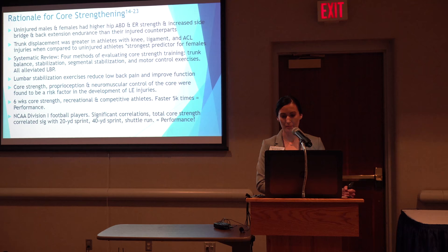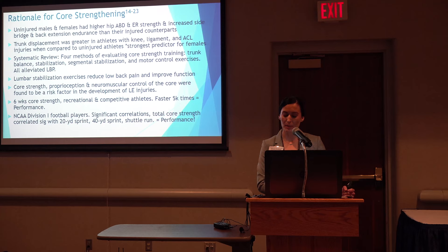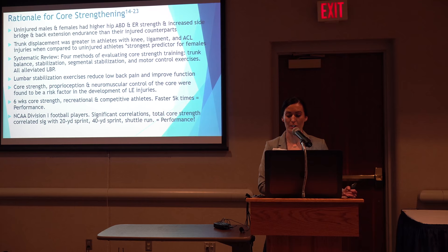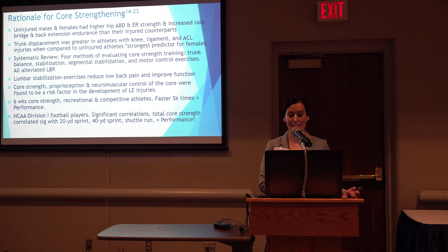What has the literature found regarding core strength? Uninjured males and females have greater hip abductor and external rotation strength, can hold side plank longer, and demonstrate higher back extensor endurance compared to injured controls. Trunk displacement through lateral leaning with side cutting is greater in athletes with knee ligament injuries and has been found to be one of the strongest predictors of injury risk. A systematic review found four core-targeted rehab protocols alleviated low back pain, and lumbar stabilization specifically improved function. Six weeks of core strengthening in recreational runners resulted in faster 5K race times, and a significant correlation was found between total core strength and the 40 and 20-yard dash and shuttle run in Division I football players.